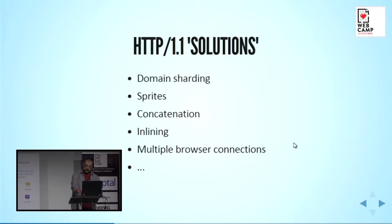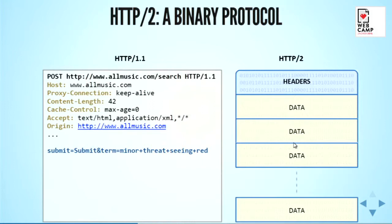HTTP/2 tries to address this, and the biggest change is that it is really a binary protocol — you will not be able to just telnet into your server and see what's coming back. You'll need a tool like Wireshark to see the data. On the left side you can see typical HTTP 1.1 requests, and on the right side are HTTP/2 requests where you just see blocks or frames of binary data shipped over the connection.